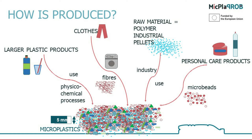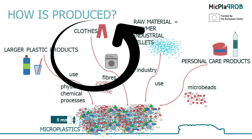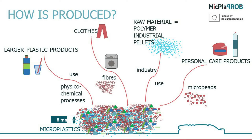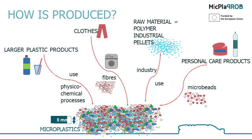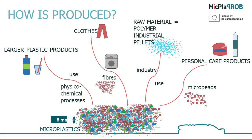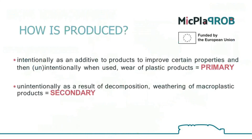Microplastics can also be a byproduct generated through the life cycle of plastic products — by using them, by their wear, erosion, or washing, for example from synthetic fabrics. The source of microplastics can also be larger plastic products which we dispose of incorrectly. In this case, the macroplastic products become waste, and under various physicochemical processes and UV rays or sunlight, they may disintegrate into smaller plastic particles up to five millimeters in size.